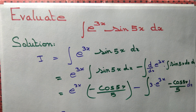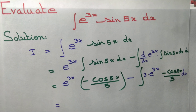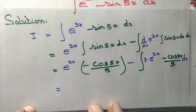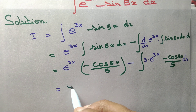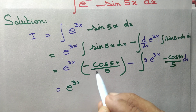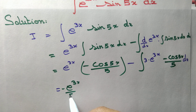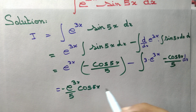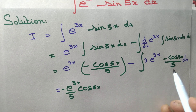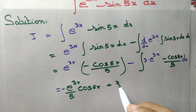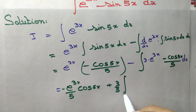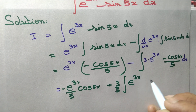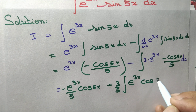We can take the constant out of the integration. This gives us e to the power 3x times minus cos 5x by 5, and writing the minus outside, we get plus 3 by 5 times e to the power 3x into cos 5x.